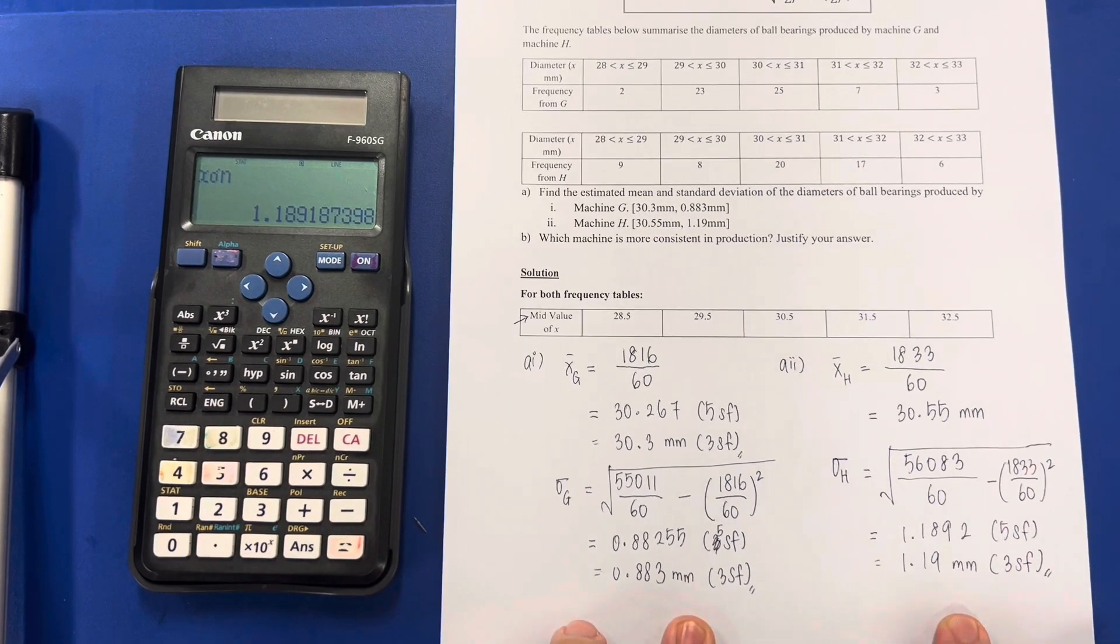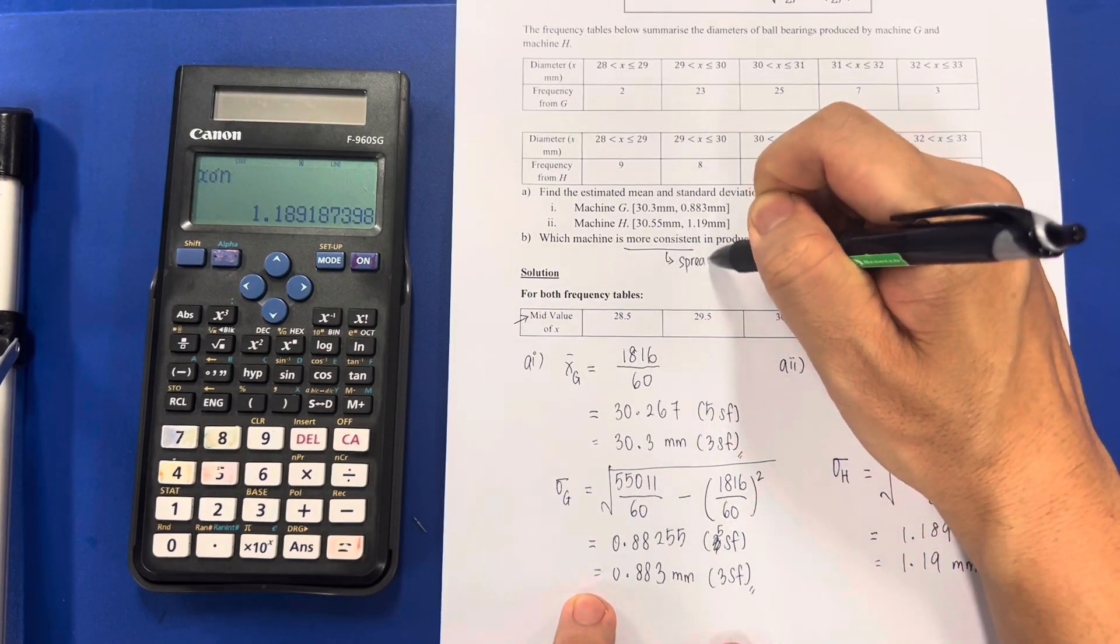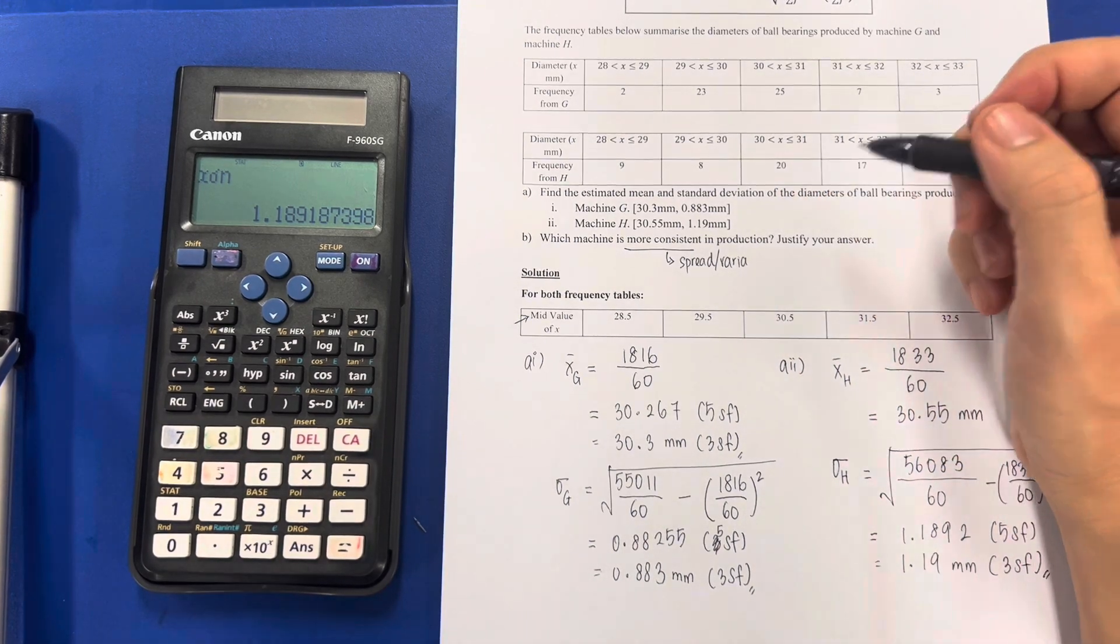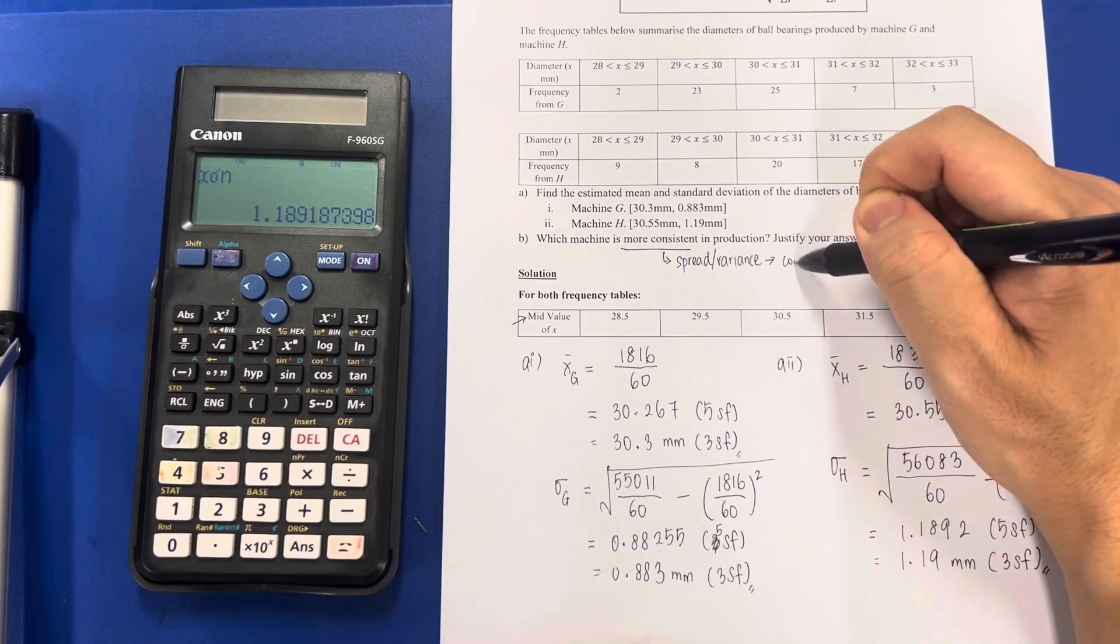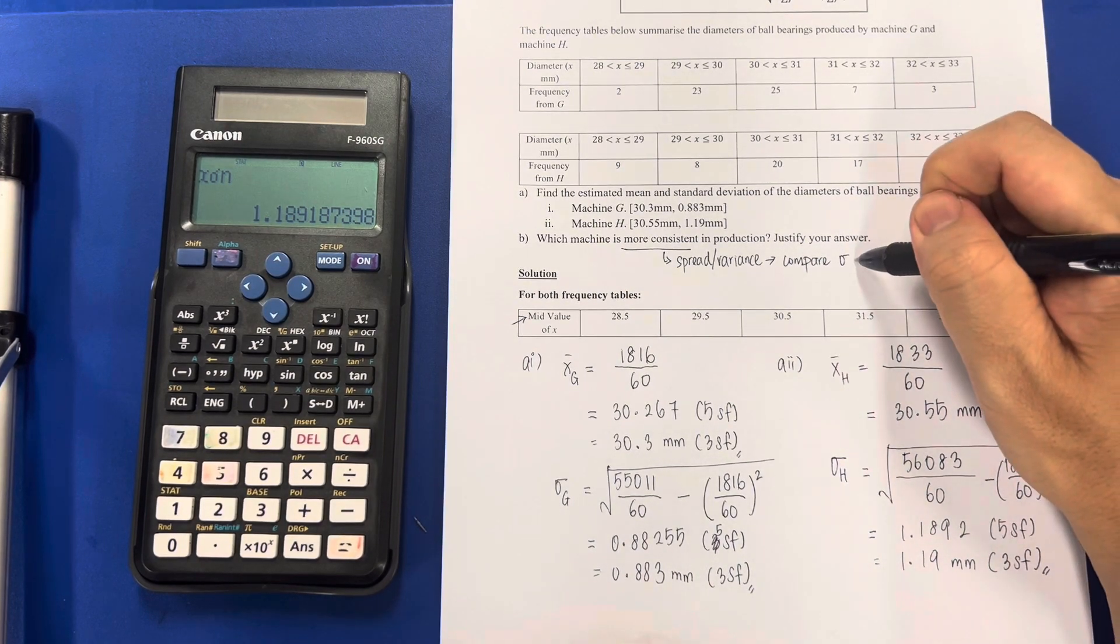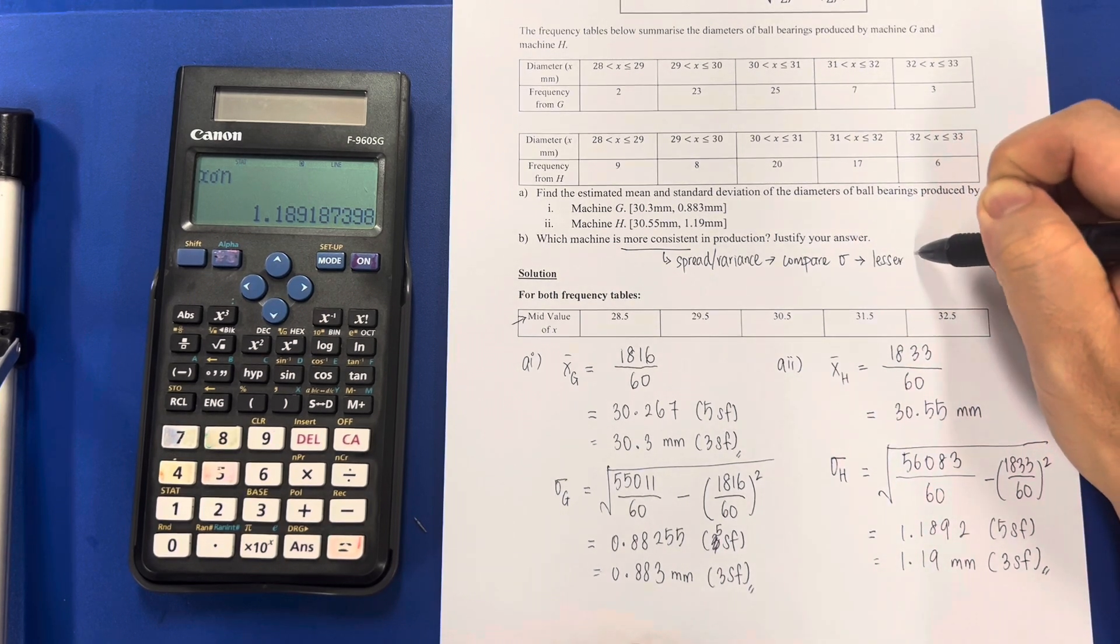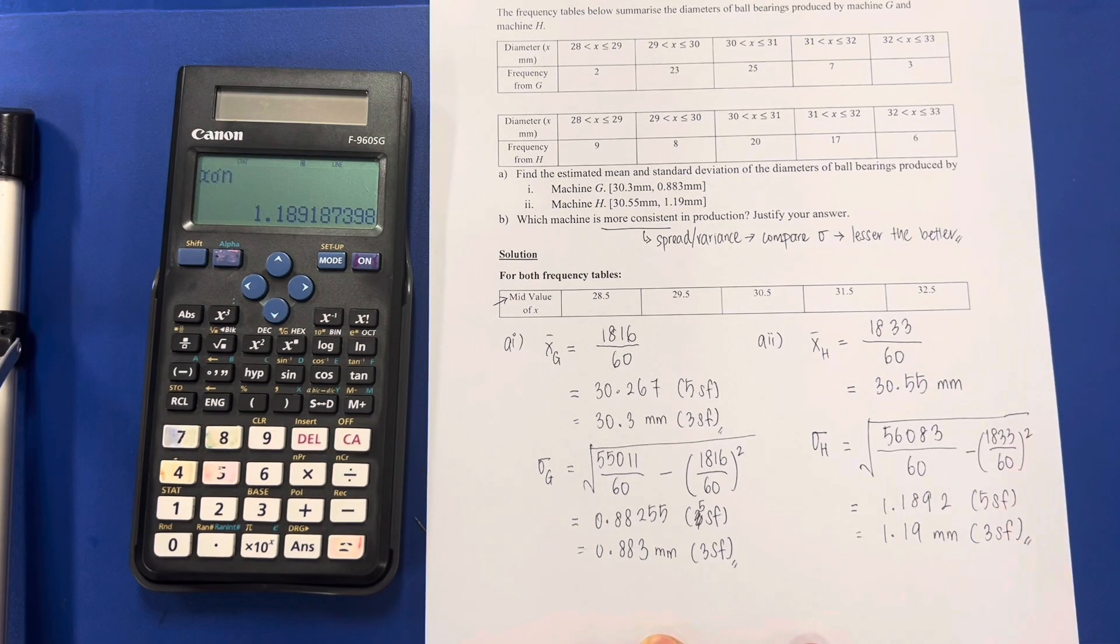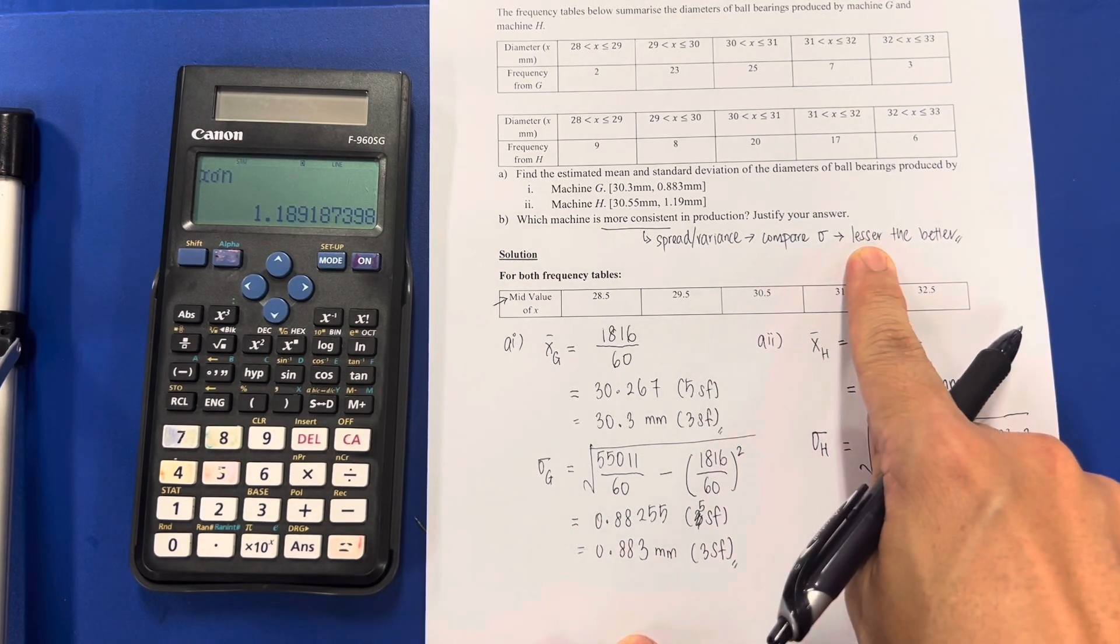With this set of data, which one is more consistent? We are talking about spread of variance. So we need to compare standard deviation, and because they want more consistent, means I need to have the lesser, the better. Since we now know the lesser the better, what should we do?